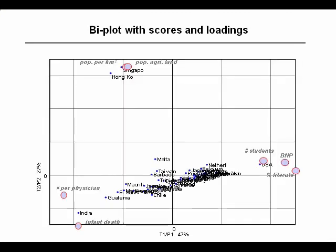The loadings provide us information about the variables, and we can put them on top of the score plot to get the biplot that we also saw before. If we do that, then we have all 49 samples plus the 7 variables in one plot. We can now see that Singapore and Hong Kong are special because their population density is very different from all the other ones. So not only do we get information that Singapore and Hong Kong are outliers, we also get an explanation for why they are.